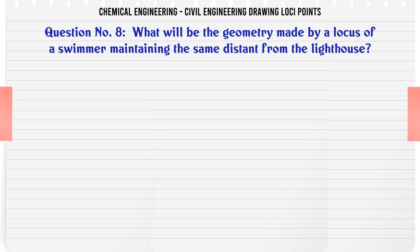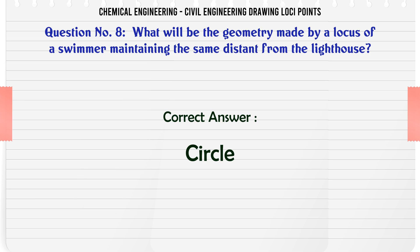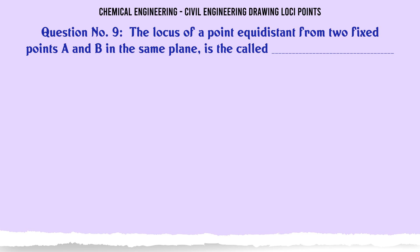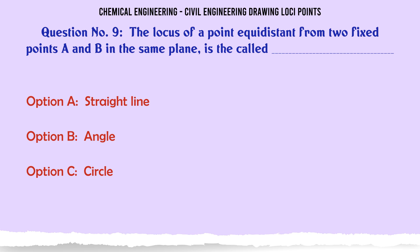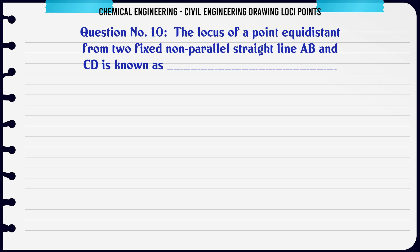What geometry is made by the locus of a swimmer maintaining the same distance from a lighthouse? Options: a) square, b) rectangle, c) circle, d) triangle. The correct answer is circle. The locus of a point equidistant from two fixed points A and B in the same plane is called: a) straight line, b) angle, c) circle, d) perpendicular bisector. The correct answer is perpendicular bisector.